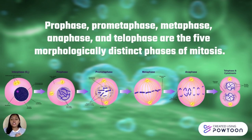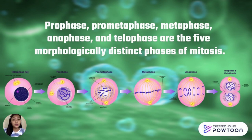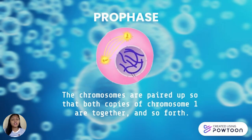Each phase includes distinct processes in the chromosomal alignment and separation process. After mitosis, the entire cell divides into two through the process of cytokinesis.